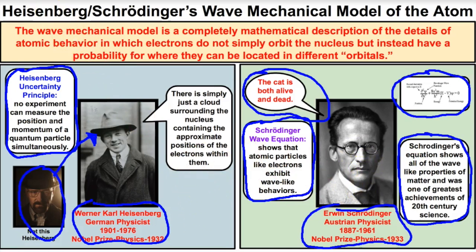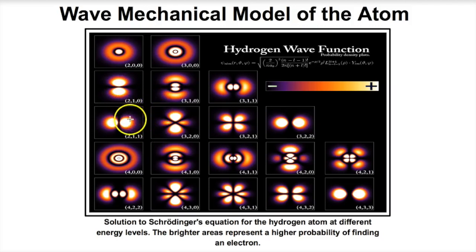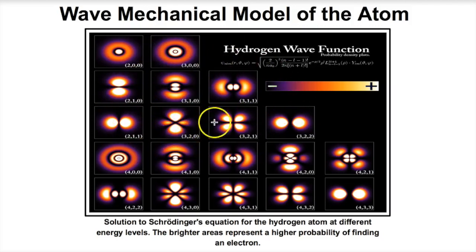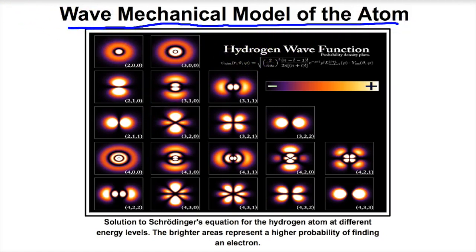The wave mechanical model of the atom shows that at the center of each atom is a nucleus, and the bright spots in the orbital images represent the highest probability for where electrons will be. No longer do we have electrons orbiting the nucleus like planets — instead, we use a mathematical equation to determine the highest probability for where those electrons are going to be. This is our current understanding of the atom.